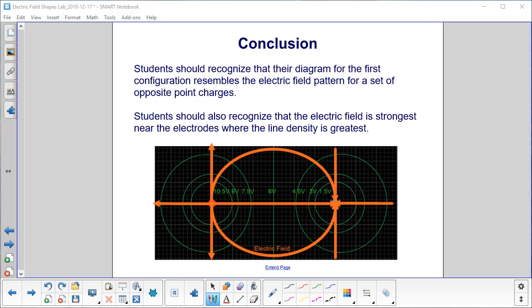Students should recognize that their diagram for the first configuration—that is, if your first configuration had one pin here and one over here and one was plus, one was minus—resembles the electric field pattern for a set of opposite point charges.